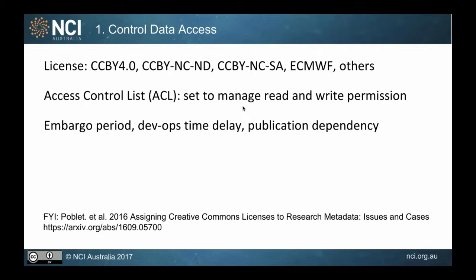There is also a social aspect of data access. For a research project, we often see an embargo period — for example, after two years the data can be made available, or some researchers want to share data only after their journal article is published. Another example from the Bureau of Meteorology involves a six-month time delay between when data is developed and verified until it becomes operationally available on our THREDDS server.